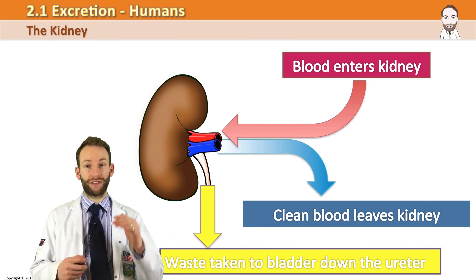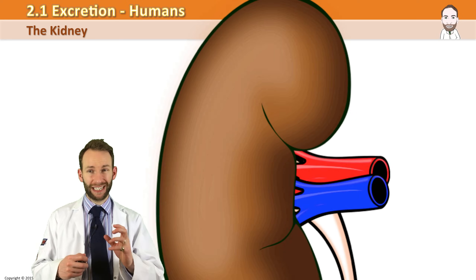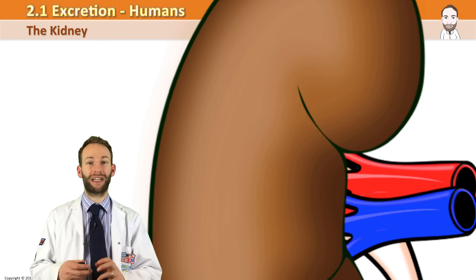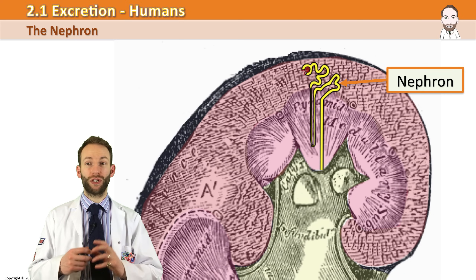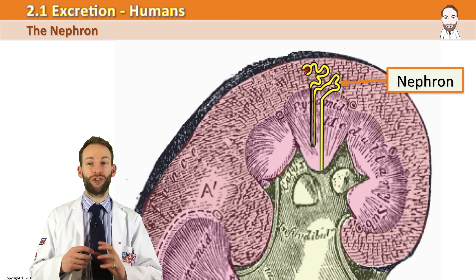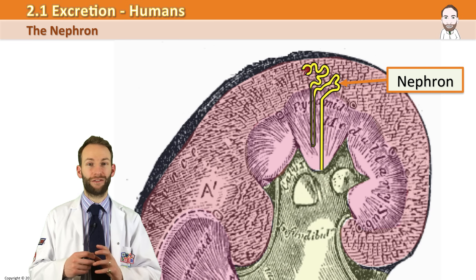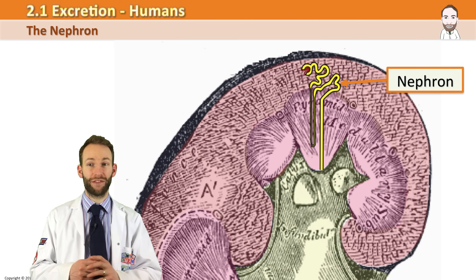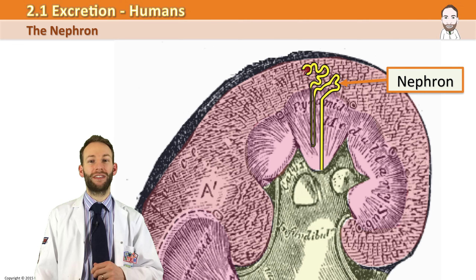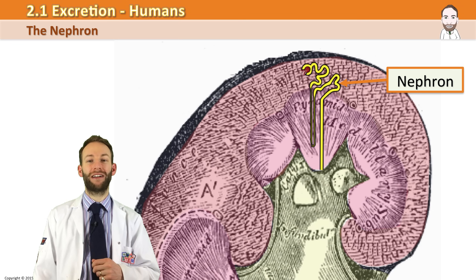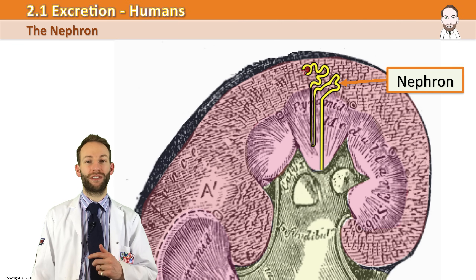You've got to delve deep, right down inside the kidney, right down to a microscopic level to find out. What you would see are lots and lots of tiny tubules called nephrons. There are about a million of them in each kidney. If you could unravel them, they would stretch for about 60 kilometres.